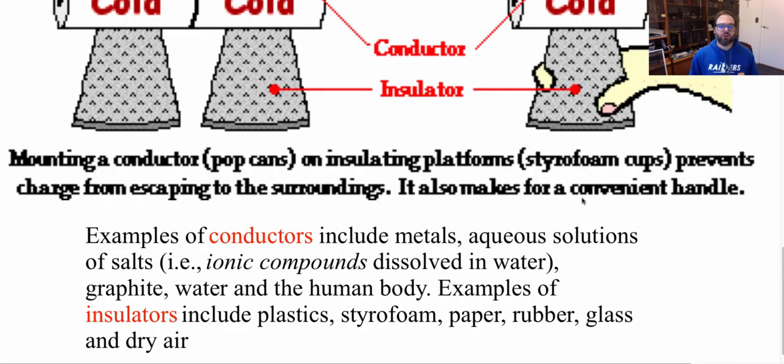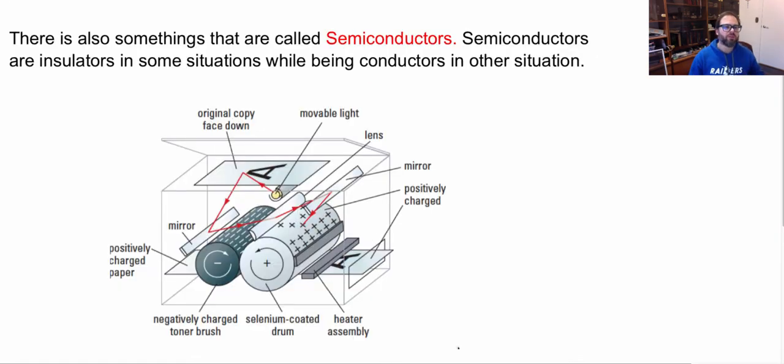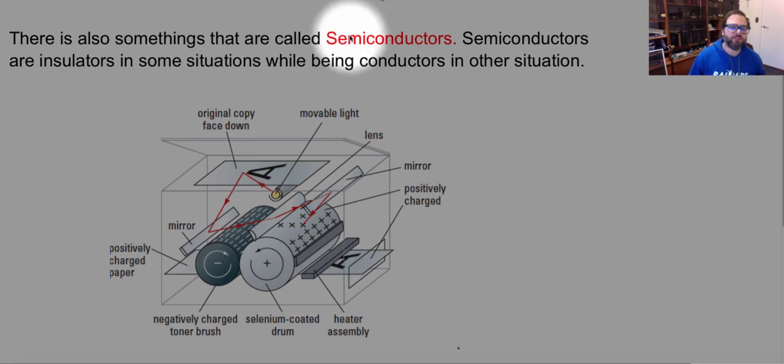Some materials are good conductors while some are good insulators. We have one other type of material, which is called a semiconductor. Now, semiconductors are very interesting. In certain situations, under certain conditions, they will be insulators, while as under other conditions, they will be good conductors. An example of this is selenium. Selenium is a conductor when light is shone on it, but in the dark it is an insulator. We use this idea for photocopying.